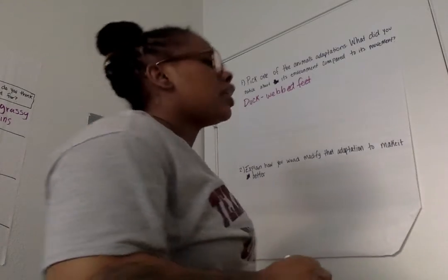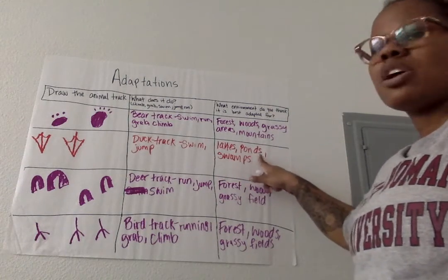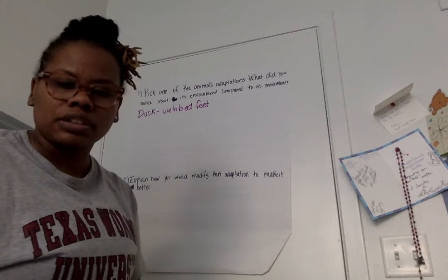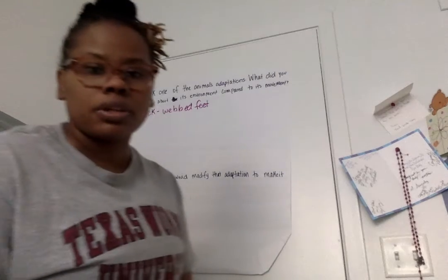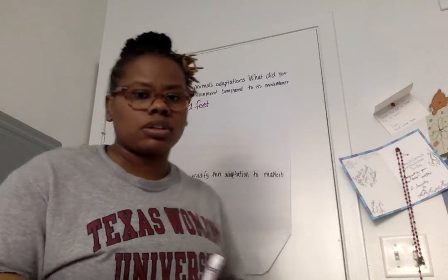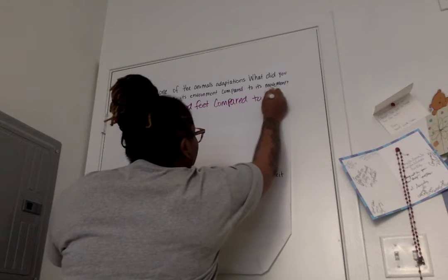What did you notice about its environment compared to its movement? We said that the duck swims, and its environment is lakes, ponds, and swamps. One thing we noticed right off the bat is that ducks can swim. If anything swims, they automatically live in water. We didn't list anything to do with land — it was all water: ponds, lakes, and swamps.